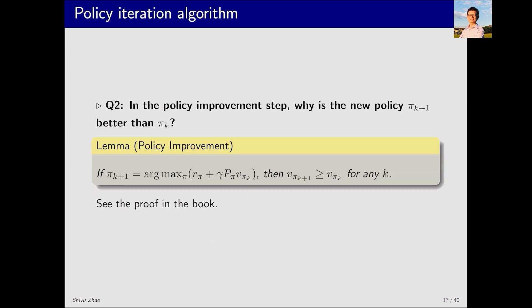Second question. Why is the new policy πk+1 better than πk? Why is it called policy improvement? πk+1 is obtained by solving this equation when vπk is given. We can prove that vπk+1 is always greater than or equal to vπk, making πk+1 better than πk. I merely give this conclusion here. For a detailed proof, you can check my book.